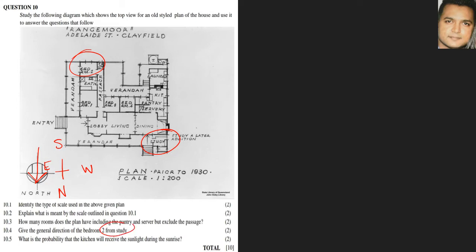Keep the cardinal points in mind — we are standing at the study, so it's from the study that we determine the direction of bedroom two. Moving in an upward motion from the study means moving south, but also moving east at the same time. So the direction is southeast.